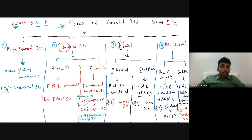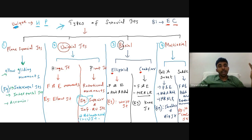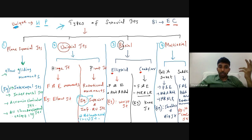Plain synovial joints have flat articular surfaces and allow only gliding movements. Examples include intercarpal joints, intertarsal joints, acromioclavicular joint, and all chondrosternal joints except the first chondrosternal joint, which is a classical example of a primary cartilaginous joint.